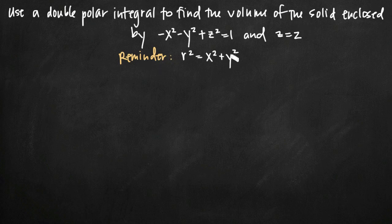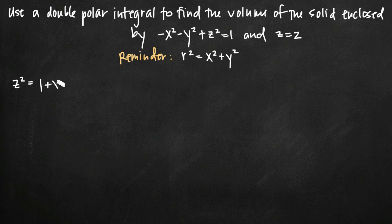I've got a reminder formula written here which we'll talk about in a little bit, but the first thing we want to do is get both of our equations in terms of z. We already have z equals 2, but we need to solve the first equation for z. We do that by adding x squared and y squared to both sides, leaving z squared on the left and 1 plus x squared plus y squared on the right. Taking the square root gives us z equals square root of 1 plus x squared plus y squared.